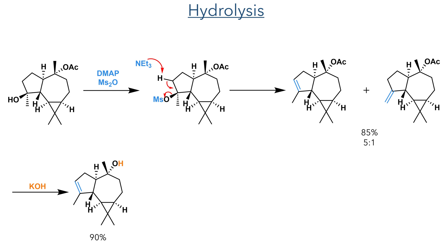Having served its purpose, the acetate protecting group was then cleaved using potassium hydroxide, completing the synthesis of the aromadendrane fragment.